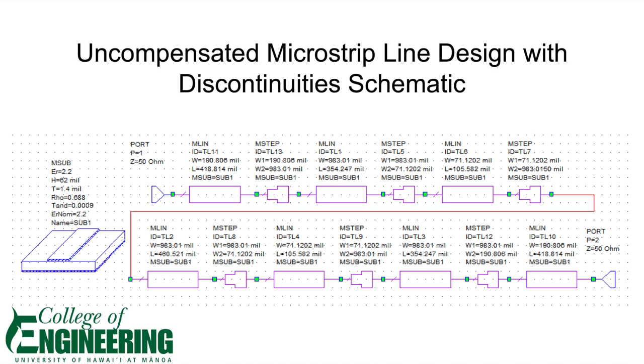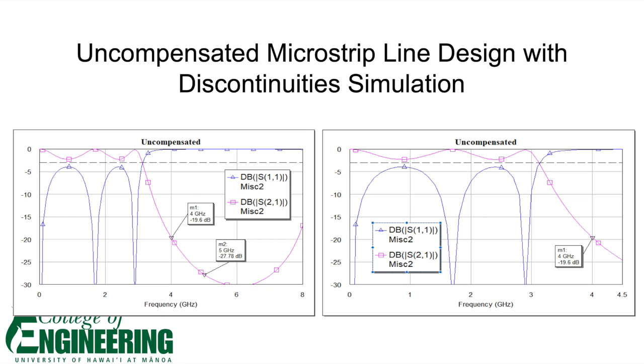Following the HK principle of slowly adding complexities to the problem, we added the M-step element and the design in between each M-line element to represent the discontinuities found when the width of the microstrip has changed. The simulation of the uncompensated microstrip design shows a shallower ripple in the passband, and the passband also got a little bit shorter with a cutoff frequency at around 3.3 gigahertz.